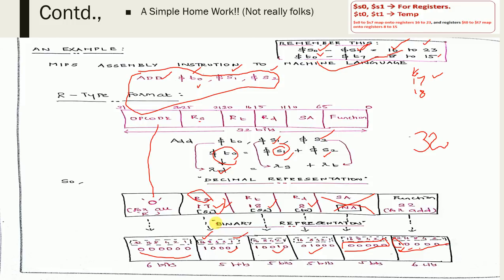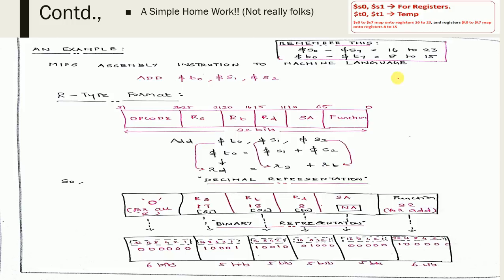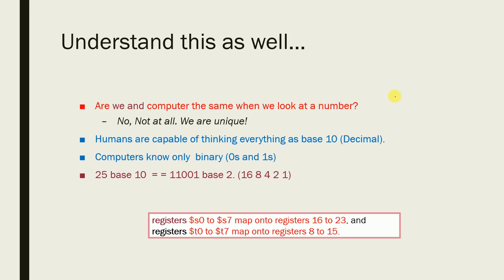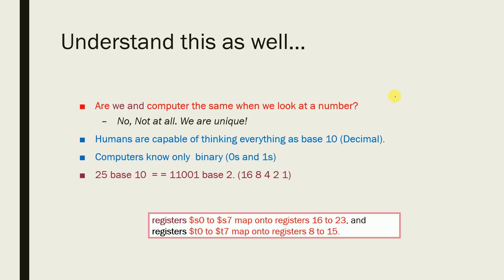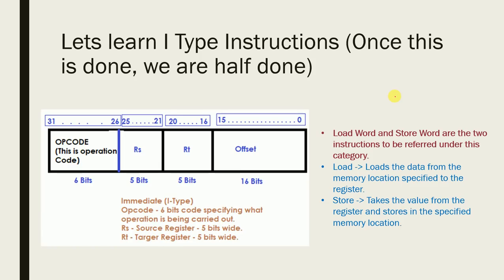There will be many questions from this area, even in competitive exams. This exercise also illustrates an important point: we are comfortable with decimal (knowing 16, 17, 18), but the computer only knows zeros and ones. That's why we convert to machine language — the way we see it is different from how the computer interprets it.